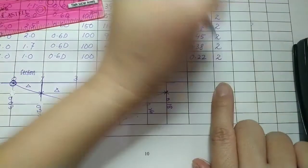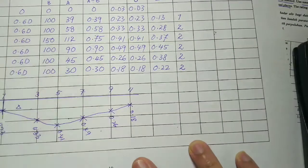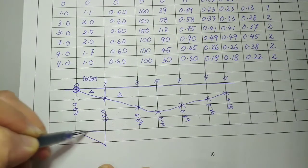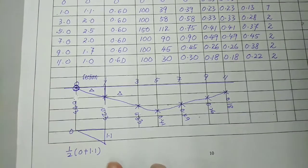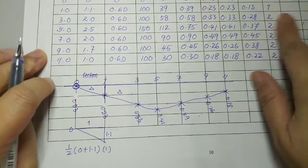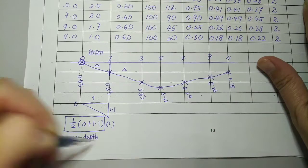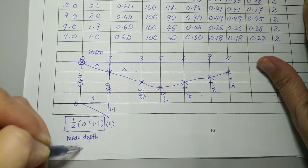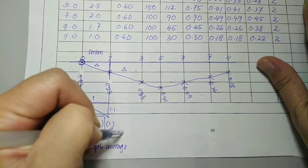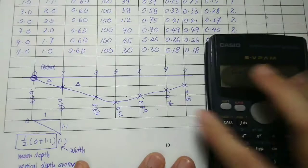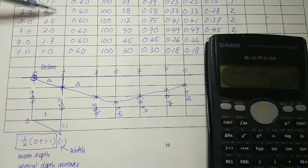For vertical average depth, as discussed before, if we take the trapezoid shape, the depth at 0 is 0 and at station 1 is 1.1. So the average is (0 + 1.1) / 2. The width is 1. This gives us the area formula where the mean depth is (A + B) / 2 — this is the average or vertical average depth.